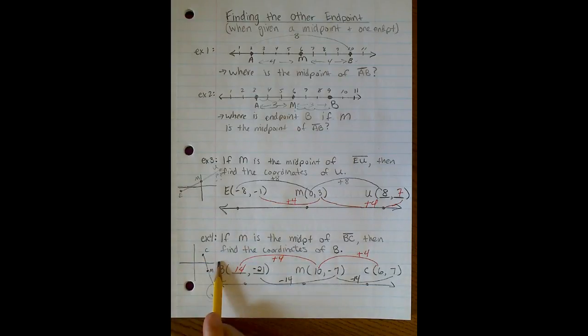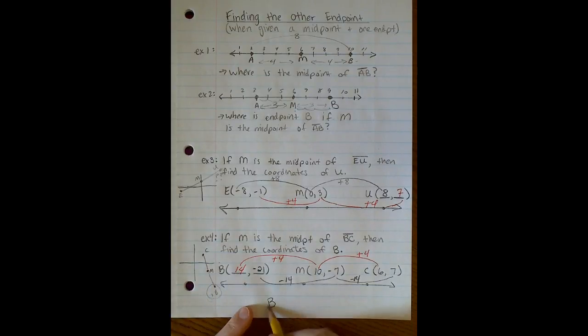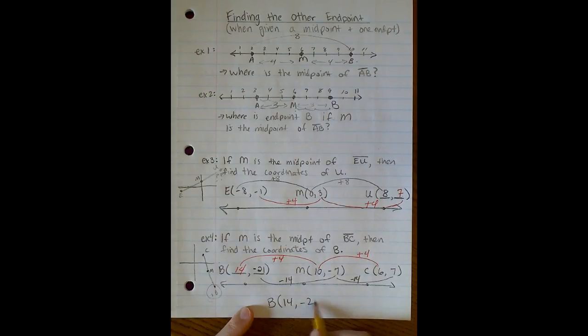Again, that makes sense because I guessed B to be somewhere over here. So positive 14, negative 21, it's going to be located somewhere in that area. So my final answer is 14, negative 21.